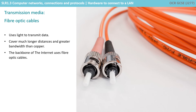Fibre optic cables use light to transmit data. They can cover much longer distances than copper cables and have a higher bandwidth due to reduced interference. They are therefore used in high traffic connections such as between switches and to remote buildings. The backbone of the internet is made of fibre optic cables.